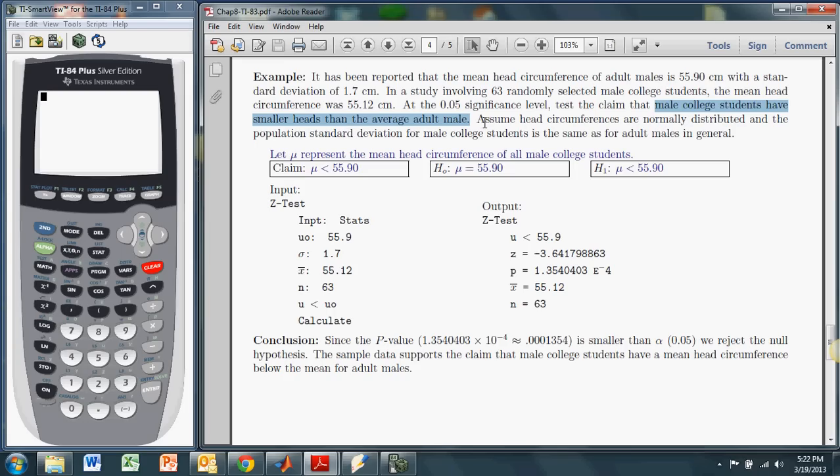So we will assume the head circumferences are normally distributed, and we will also assume that the population standard deviation for male college students is the same as for the adult males in general. In other words, the population standard deviation is assumed to be 1.7.